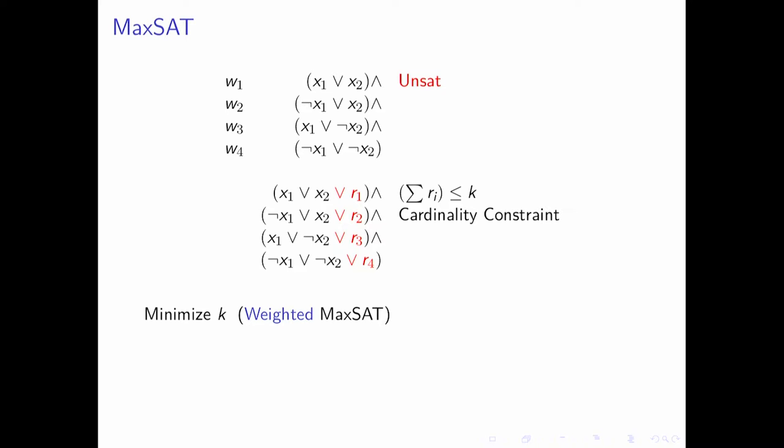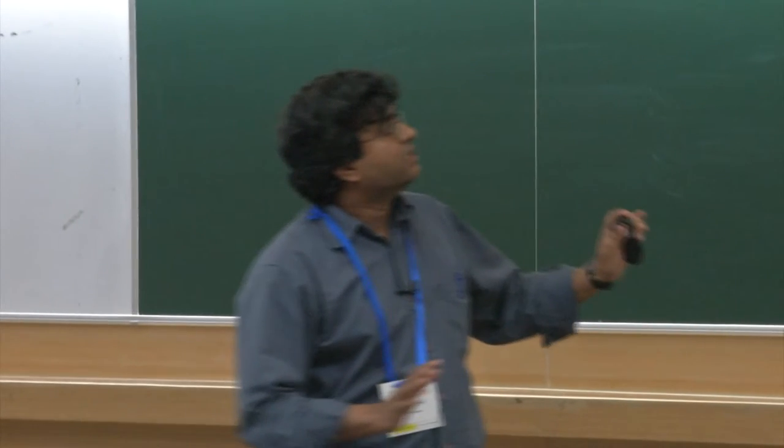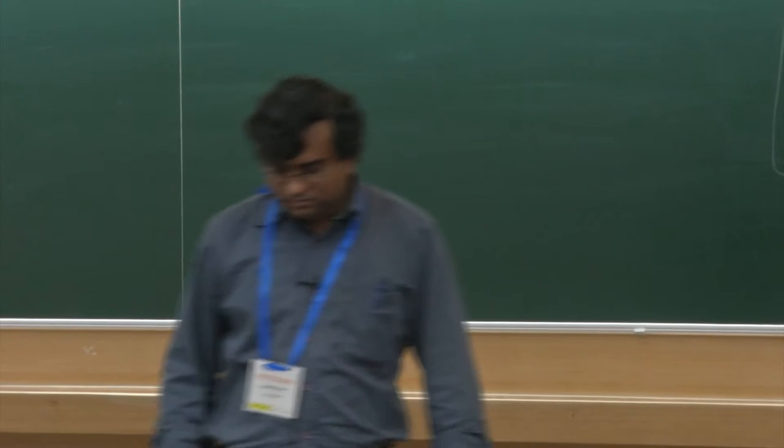For many practical applications, some constraints are more important than others, so weights are attached to each clause. The idea is to minimize the cost: if a constraint is not satisfied, its corresponding weight is added to the cost. This gives rise to a pseudo-Boolean constraint where Ri is a propositional variable (0 or 1) and the weights are positive integers. We want to minimize K, the total weighted cost.